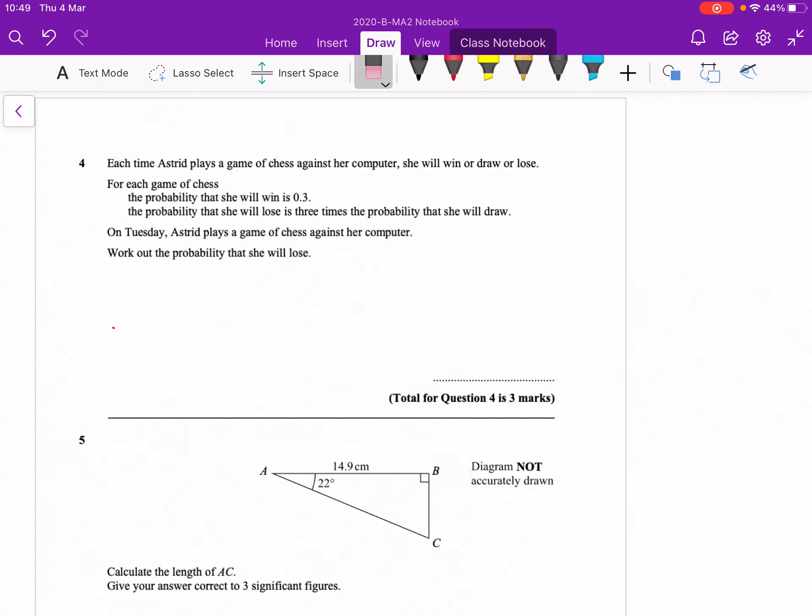Okay, question number four. Game of chess - three possible outcomes which are win, lose, or draw. It says that the probability of winning is 0.3. The probability of losing is three times bigger than drawing, so I don't know what drawing is, I'm going to call that x. Losing is three times bigger than that, so I'm going to call that 3x. And because they are the only possible outcomes, their total must add up and make a whole one.